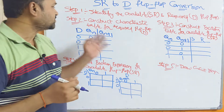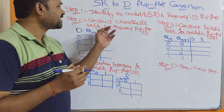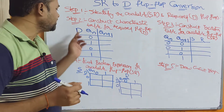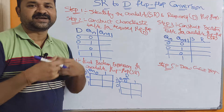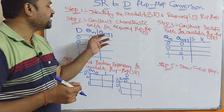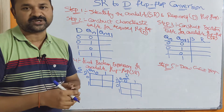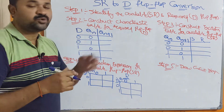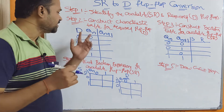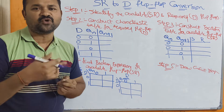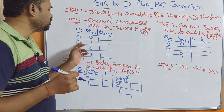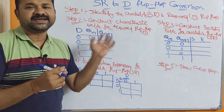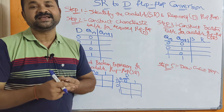Step two: construct the characteristic table for the required flip-flop, that is the D flip-flop. Here D is the input, QN is the current state output, and QN+1 is the next state output. D and QN are the inputs while QN+1 is the output. With two inputs, we have four combinations: 00, 01, 10, 11.